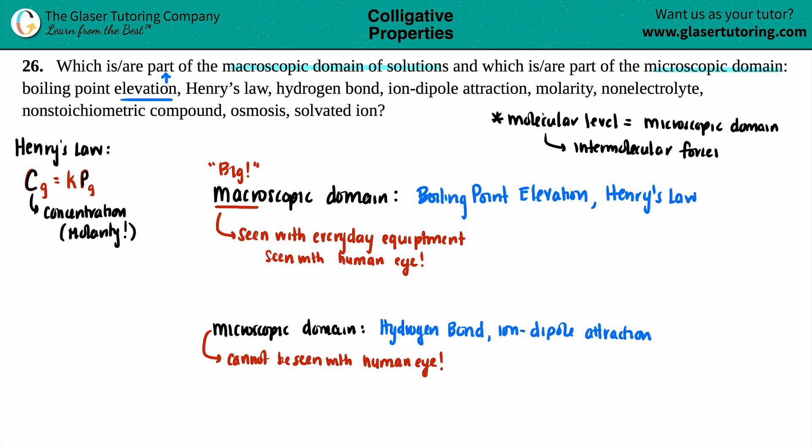Molarity. We kind of went over this when we talked about Henry's Law with the concentration. Concentration is molarity, right? Tomato, tomato. And molarity just equals the amount of moles that you throw into a liter of solution. So you can clearly see the volume that you have of a certain solution. You can calculate the moles by finding out how many grams you used. So molarity is a macroscopic, can be seen with the human eye.